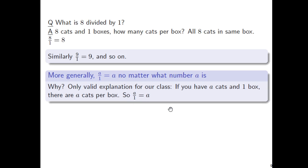And this really is using that interpretation of fractions as being cats in boxes. So because A divided by 1 equals A, either A over 1 and A, either of these can be replaced for the other.